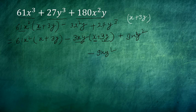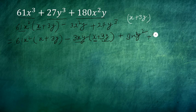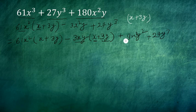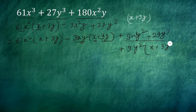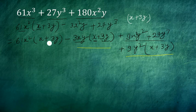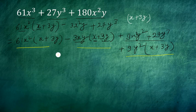After adding 9xy², we write 27y³ as it is. If we only talk about this term, after proceeding from here, I can take 9y² common. Taking 9y² common gives x + 3y. Now you can see that in all terms, x + 3y is common.